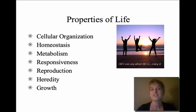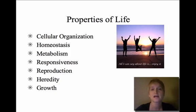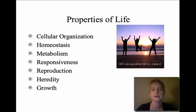So there are seven properties of life, and this is a list of things that we use to decide if something is living or not. We have cellular organization, homeostasis, metabolism, responsiveness, reproduction, heredity, and growth. I'm going to go through this list one at a time and explain a little bit about what each of these means.